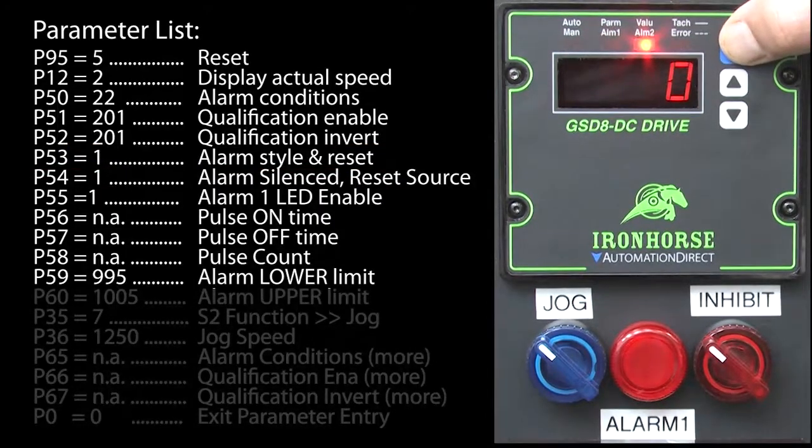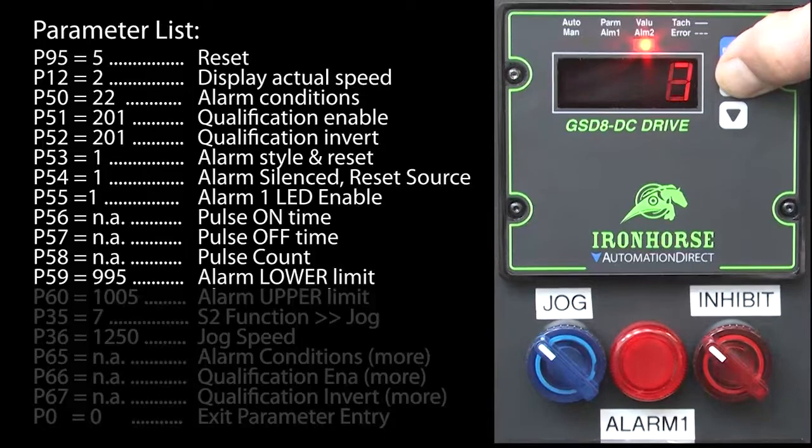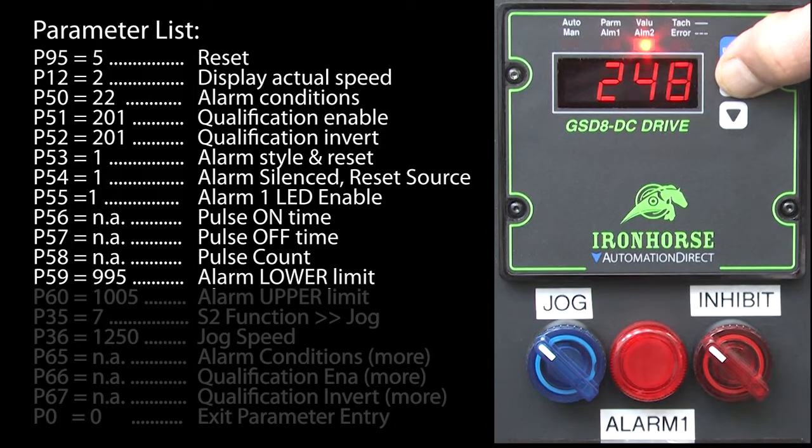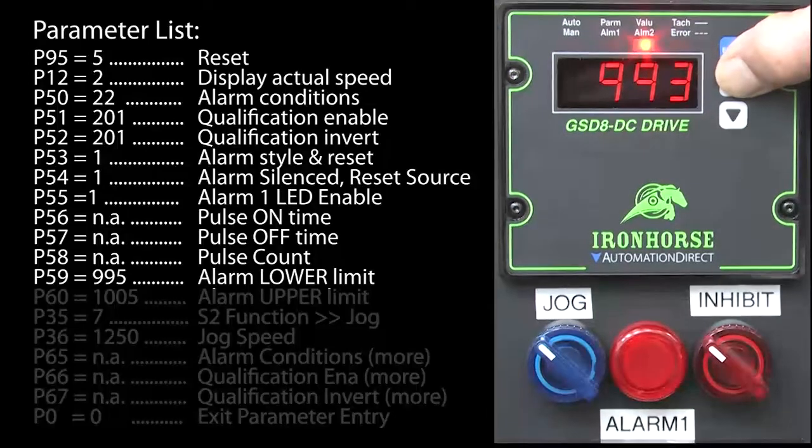Parameter 59 is the lower limit alarm. Let's suppose we want to keep tight control over 1000 RPMs. So let's make the lower limit 995.